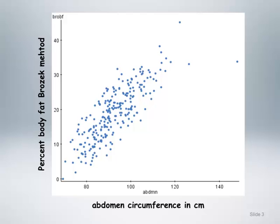Not surprisingly, we can see a clear linear relationship between abdomen circumference and percentage body fat. Although we see a few stray points away from the main cloud of data, there don't appear to be any serious outlying values that would dramatically alter the linear relationship suggested by the main body of the data points. The goal is to determine a best fit line passing through the points that provides the best prediction of percentage body fat from abdomen circumference. We can certainly visualize such a line, but the question is how do we determine the best line to draw or calculate?